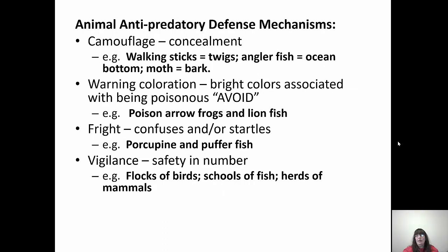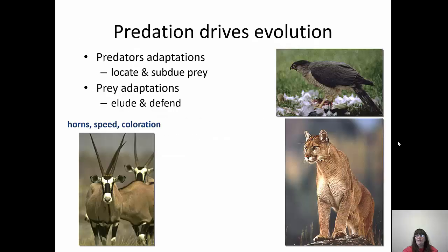Animals also have warning coloration — bright colors associated with being poisonous. Animals typically avoid bright colors. Poison arrow frogs and lionfish are examples. Fright responses like a porcupine's quills or a pufferfish puffing up confuse or startle predators. Vigilance through safety in numbers explains why birds travel in flocks, fish in schools, and mammals in herds. Predation is basically what drives evolution — predator adaptations to locate and subdue prey, and prey adaptations to elude and defend themselves using horns, speed, warning coloration, spines, thorns, and toxins.